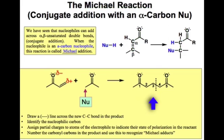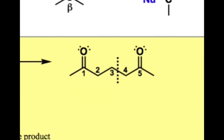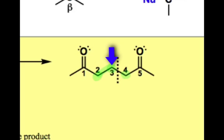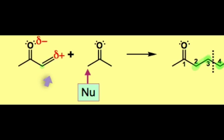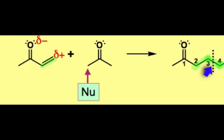Michael addition products are easily recognized by their 1,5-dicarbonyl structure. The three sp3 hybridized carbons between the carbonyl groups in the product correspond to the alpha and beta positions of the electrophile and the alpha position of the nucleophile. The Michael transformation exchanges a pi bond in the electrophile for a sigma bond in the product. As a result, it's a very energetically favorable process, often with delta G's in the negative 10 to negative 20 kilocalories per mole range.